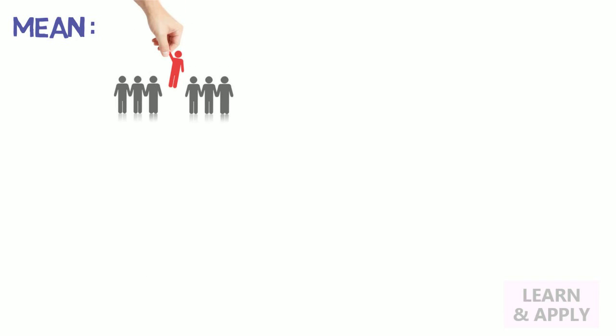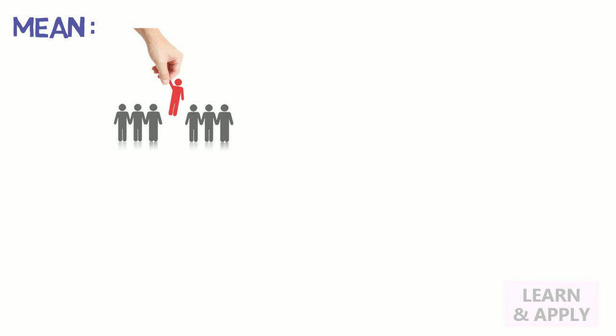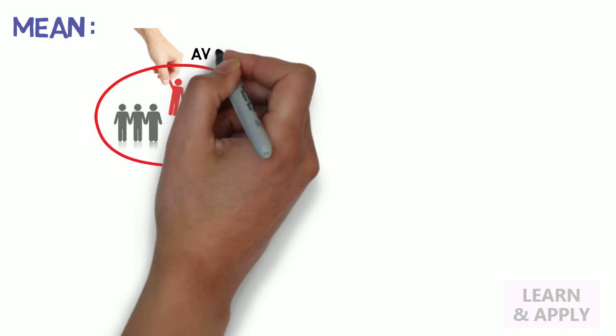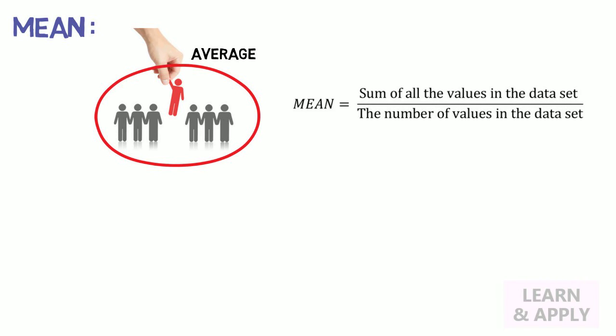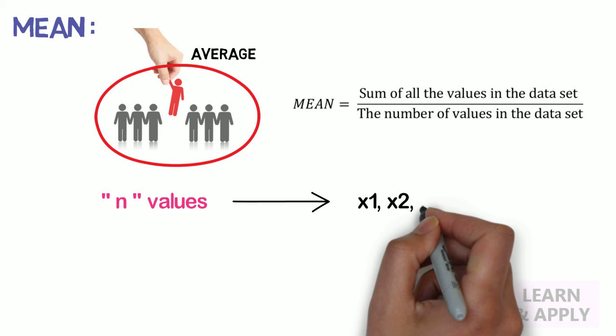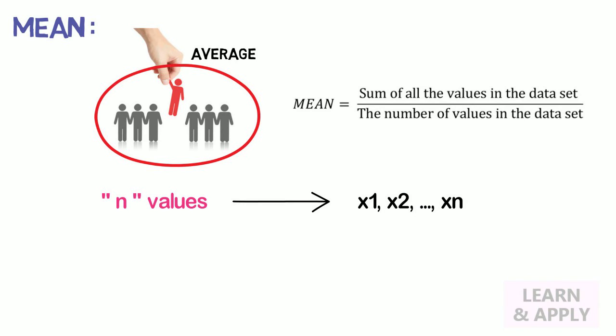Mean: The mean is the preferred measure of the central tendency, because it considers all the values in the data set. This is also called as average. The mean is equal to sum of all the values in the data set divided by number of values in the data set. So, if we have n values in the data set and they have values x1, x2 up to xn, the sample mean usually denoted by x bar is equal to x1 plus x2 up to plus xn divided by n.